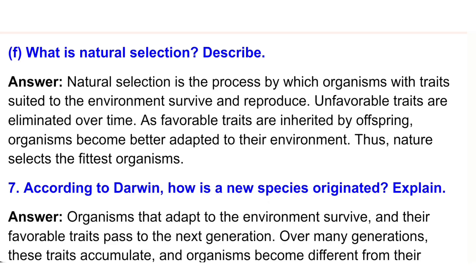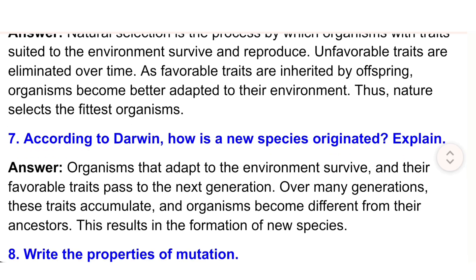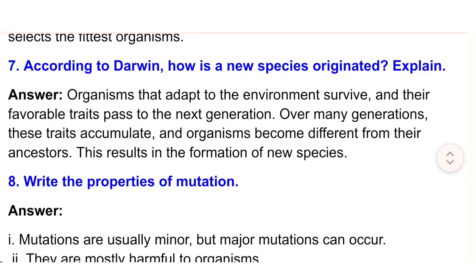7) According to Darwin, how is a new species originated? Answer: Organisms that adapt to the environment survive and their favorable traits pass to the next generation. Over many generations these traits accumulate and organisms become different from their ancestors, resulting in the formation of new species.